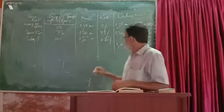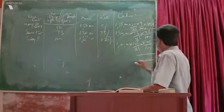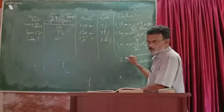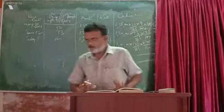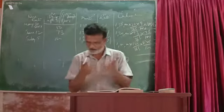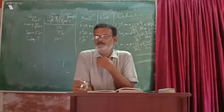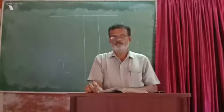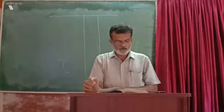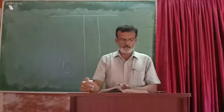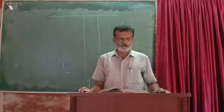Hence we can calculate the total amount of rebate on bills discounted. Next problem: from the following particulars, prepare the profit and loss account of the established bank for the year ended 31 March 2008.